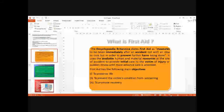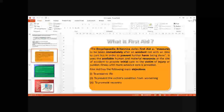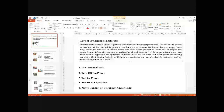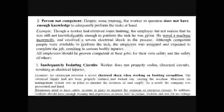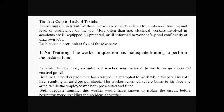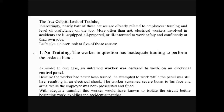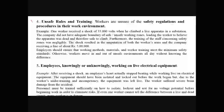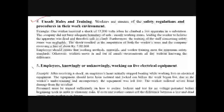In the last lecture we discussed the rules of electrical safety and the ways to prevent accidents. We covered five important causes that result in electrical accidents: no training, the person is not competent, inadequately isolating the circuits, unsafe rules and training, and fifth — employees knowingly or unknowingly working on live electrical equipment, also called overconfidence.